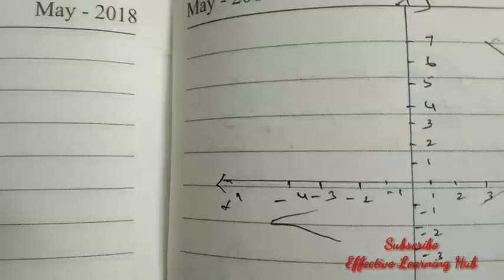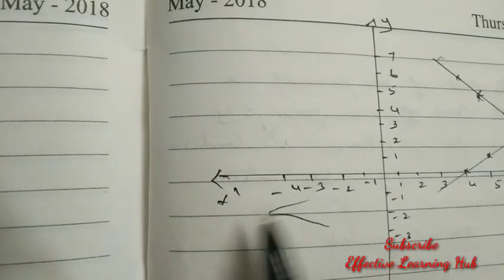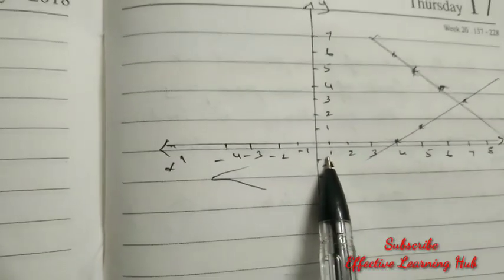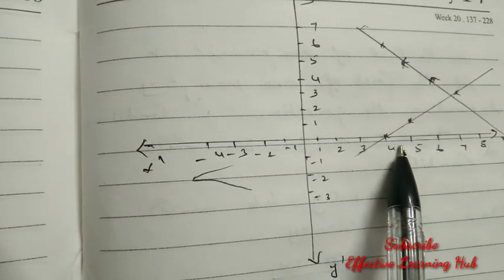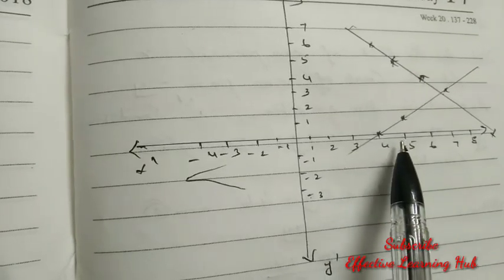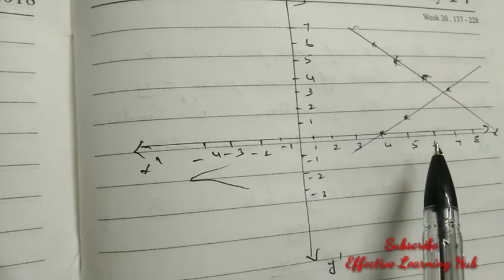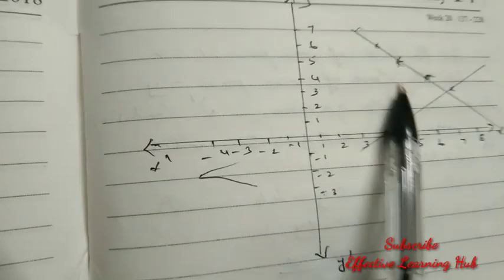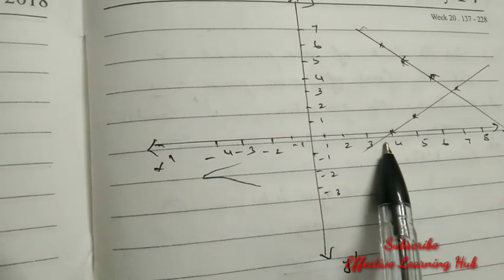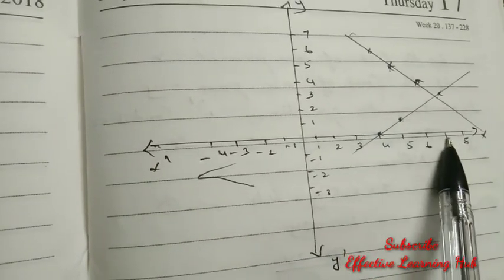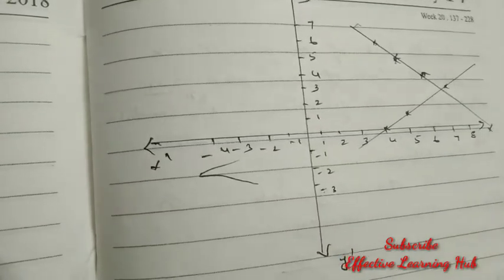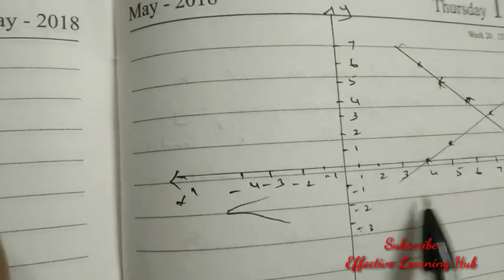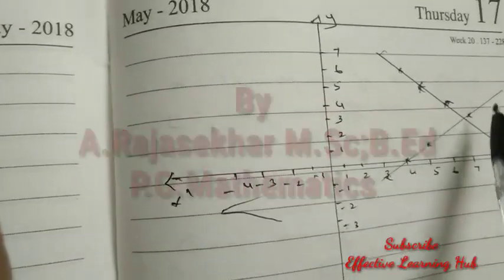Now see the graph. Mark x-axis, x-dash, y, y-dash. 1 unit equal to 1 centimeter. For equation 1, plot points (5,5), (4,6), (6,4) and join the lines. For equation 2, plot points (5,1), (4,0), (3,−1) and join the lines.